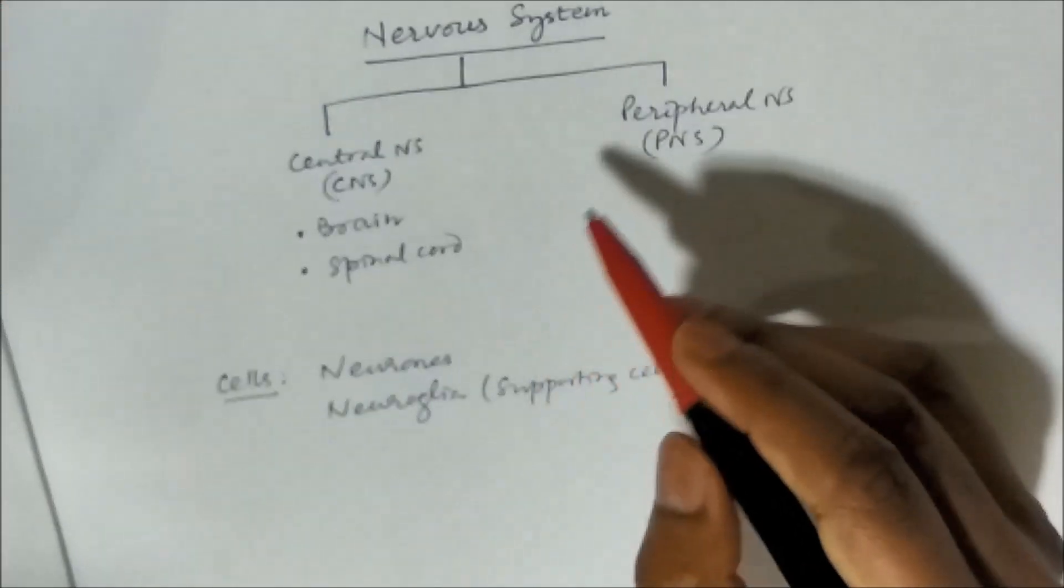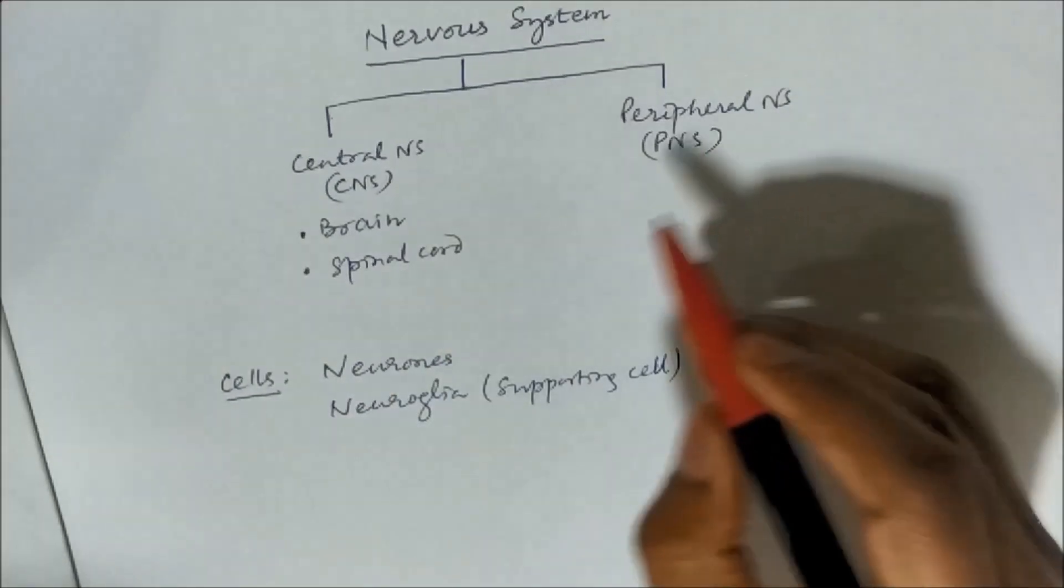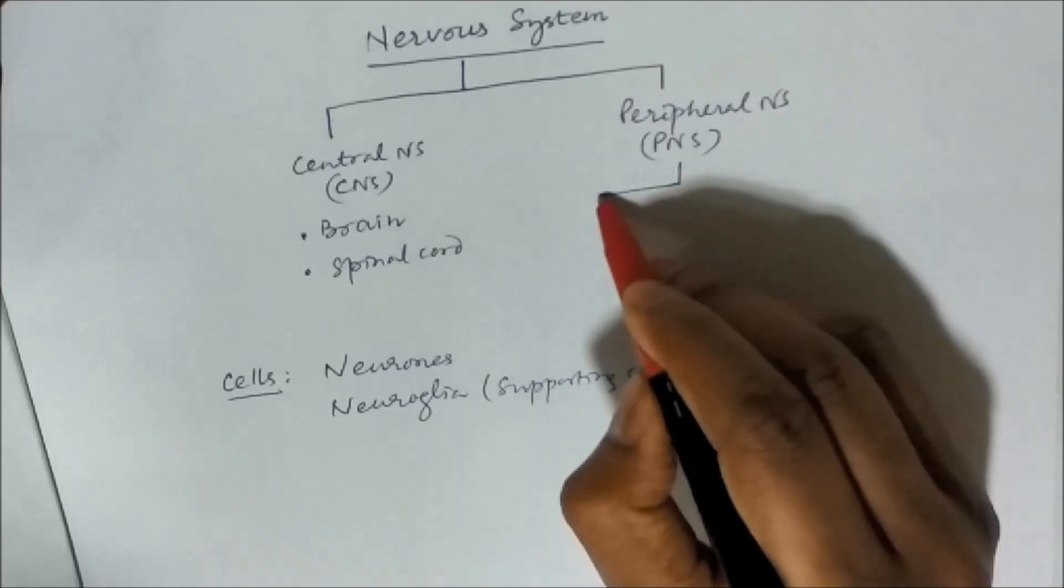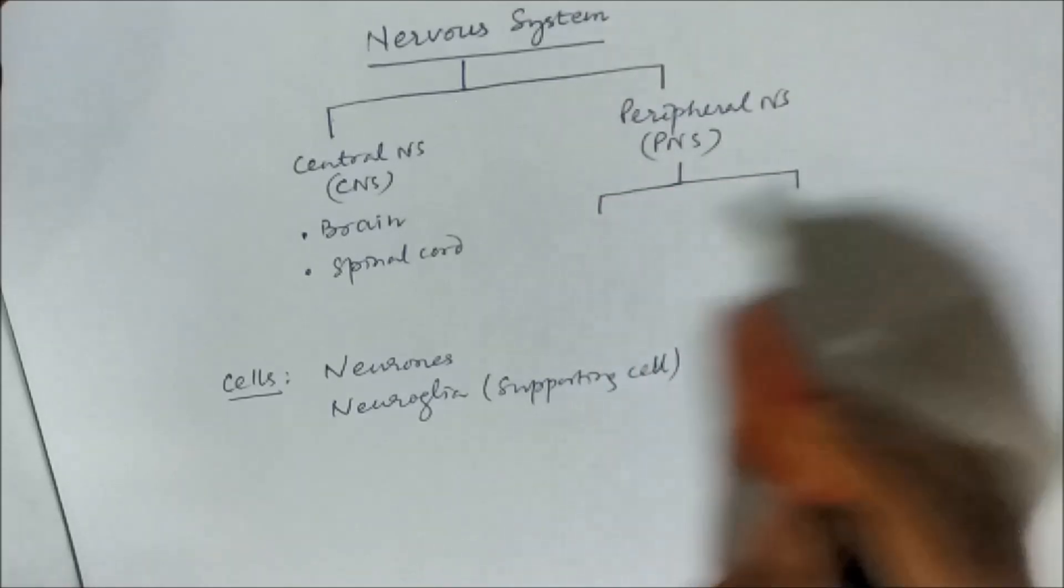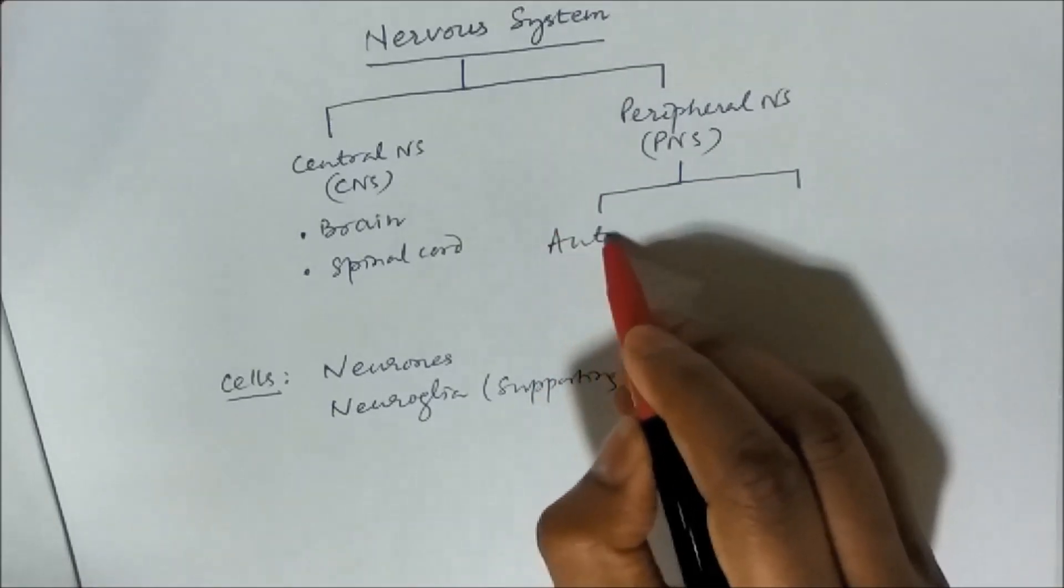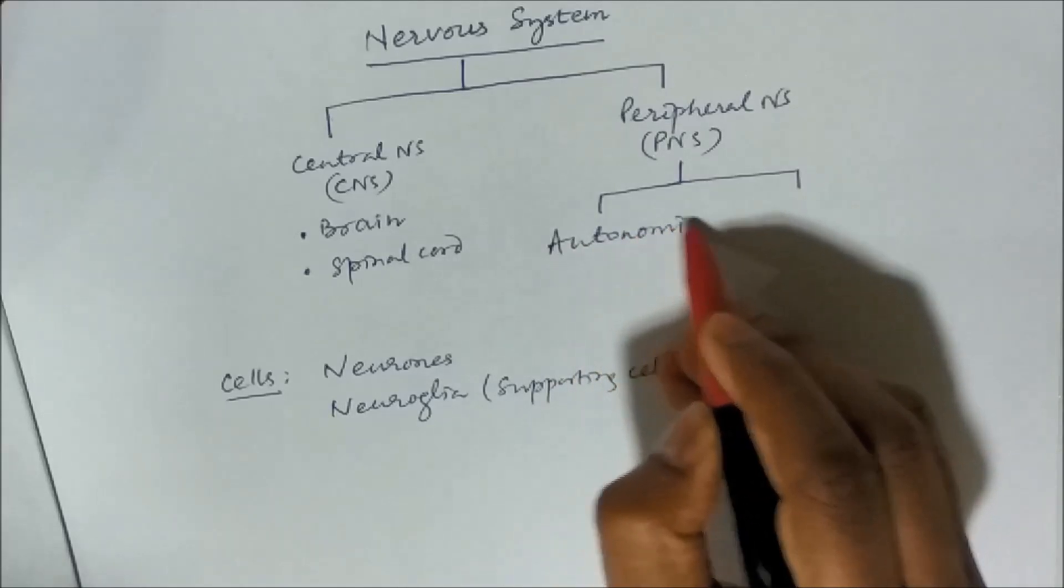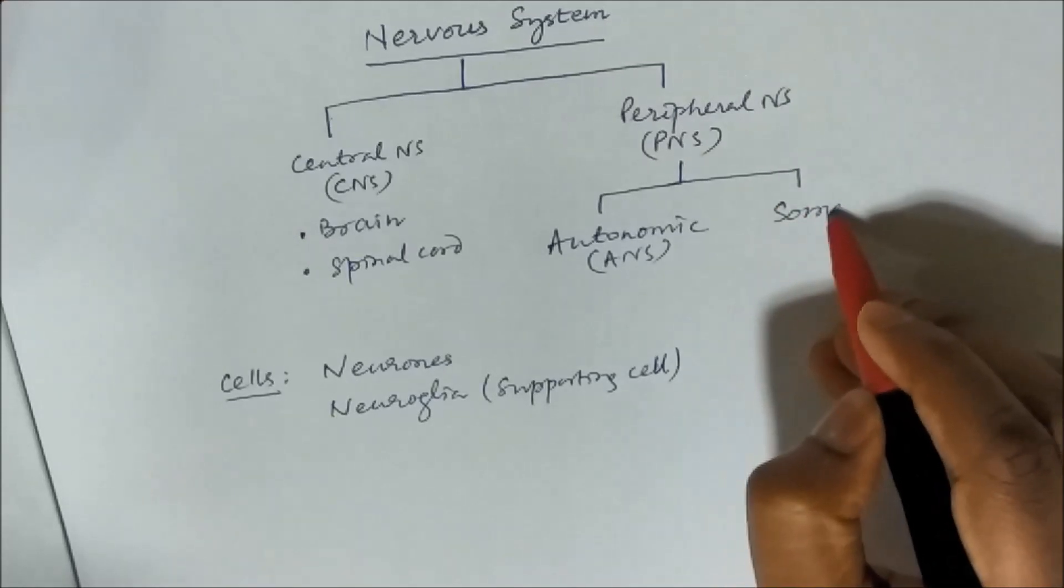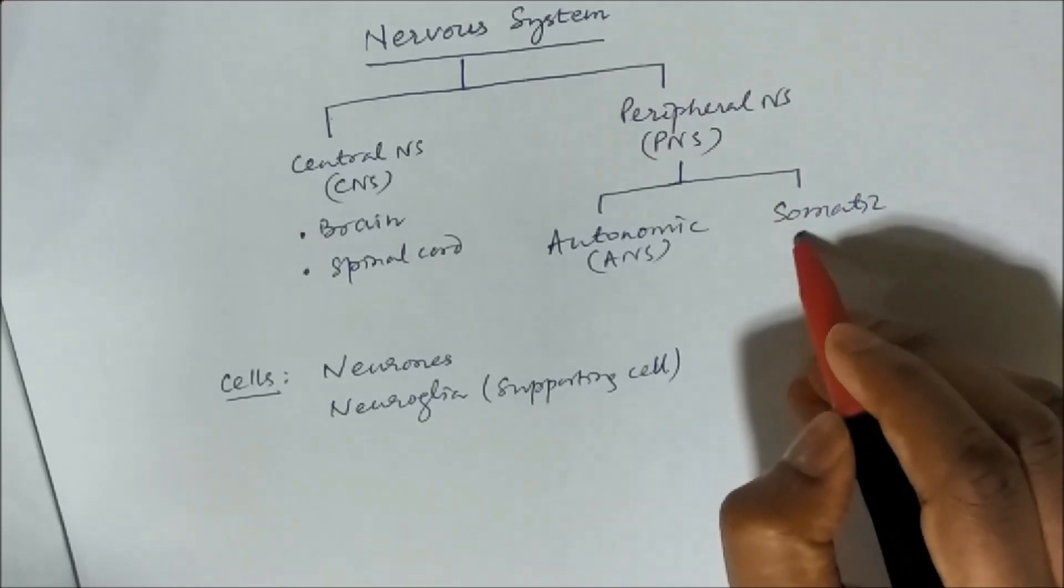So these cells are distributed in the periphery and this again can be divided into Autonomic Nervous System or ANS and Somatic Nervous System or SNS.